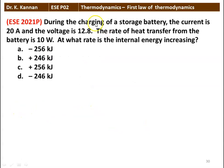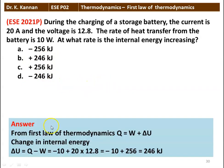Next question: during charging of a storage battery, the current is 20 ampere and the voltage is 12.8. The rate of heat transfer from the battery is 10 watts. At what rate is the internal energy increasing? From the first law, delta U = Q − W = minus 10 + (20 × 12.8) = minus 10 + 256 = 246 kilojoules. The answer is 246 kilojoules.